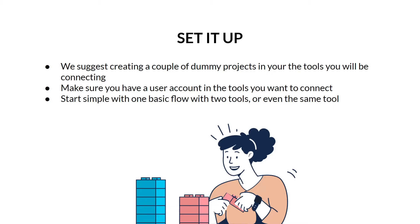Next, set it up. If you want to play around with test data first, we suggest creating a couple of dummy projects in your tools and connecting those first. If you're not able to do that, no worries — you can set up your flow in test mode to try it out before syncing all your historical items. First, make sure you have a user account in the tools you want to connect. To make things easier, log into the correct user accounts in your tools like Asana or Jira before creating your flow. Some tools require special permissions, so you can refer to our help center for details or reach out to our friendly team via the chat bubble.